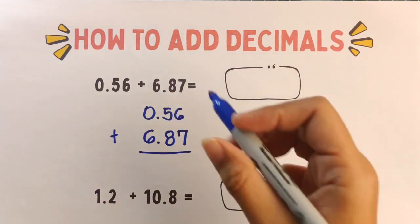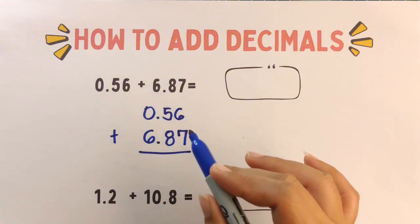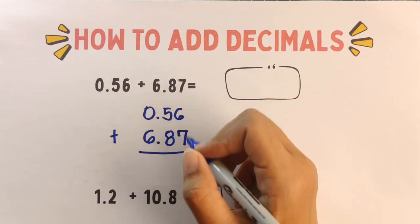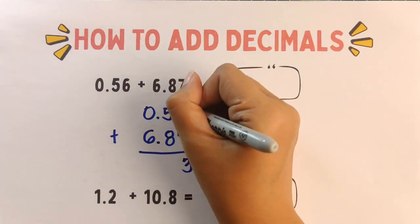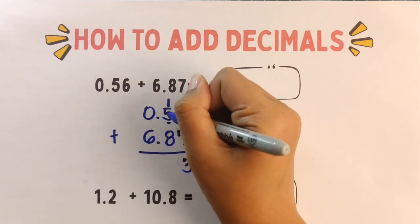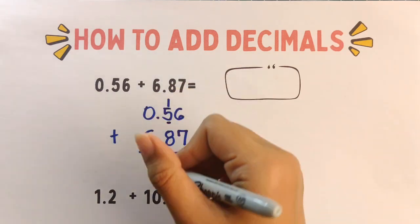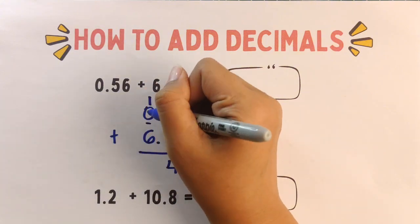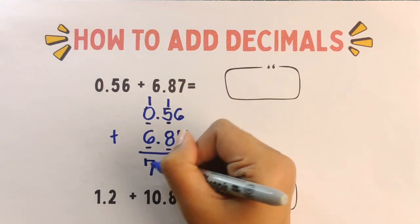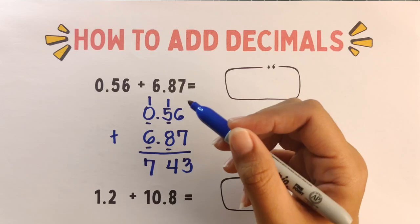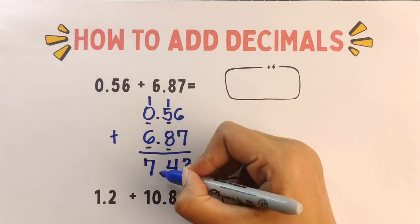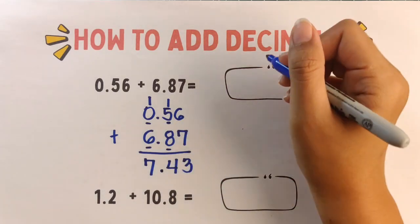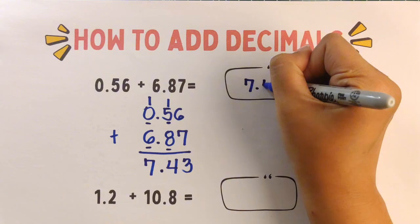Again, line up the decimal points vertically. Number two: add like whole numbers. Six plus seven is thirteen, carry one. One plus five is six, plus eight is fourteen, carry one. One plus zero is one, plus six equals seven. Then step number three: bring down the decimal point. The final answer is 7.43.